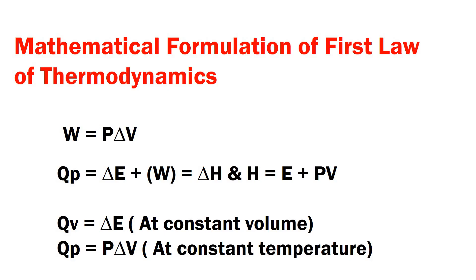Before starting the problems, let's recapitulate the formula. Here the first one: work done by the gas or work done on the gas — that is, work of expansion or contraction — W, is equal to P delta V. P is the constant pressure and delta V is the change in volume.